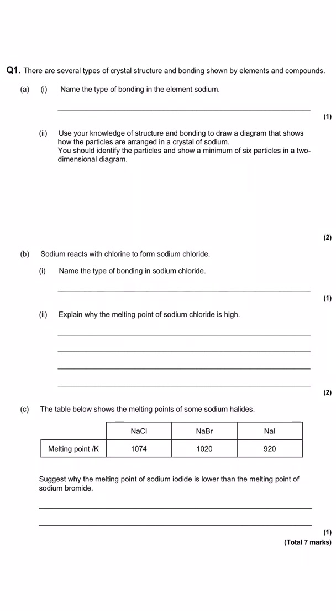This first question asks us about crystal structures and bonding shown by different elements and compounds. It starts by asking us to name the type of bonding shown by the element sodium. Sodium is in group one, the alkali metals, so it is a metal and the type of bonding is metallic.